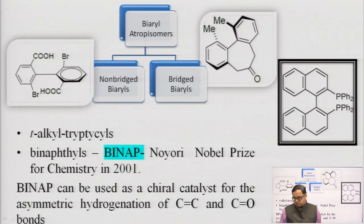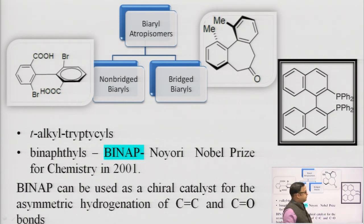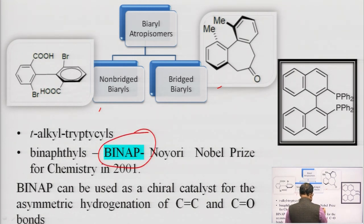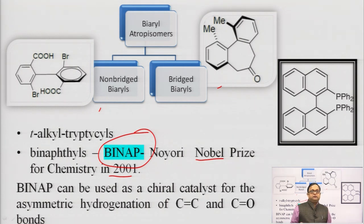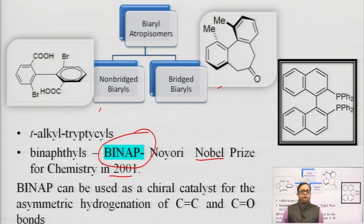Atropisomers can be categorized into two types: non-bridged biaryls and bridged biaryls. A very good example is binaphthyl — BINAP. This was the work that earned Noyori a Nobel Prize in chemistry in 2001, for the discovery of BINAP, which can be used as a chiral catalyst for asymmetric hydrogenation of C=C and C=O bonds.